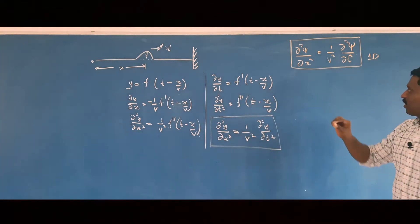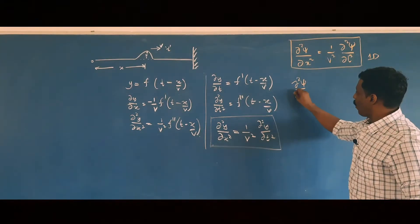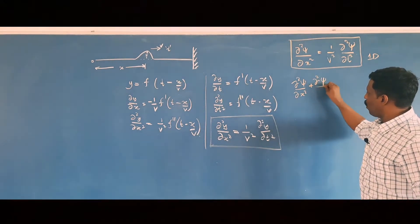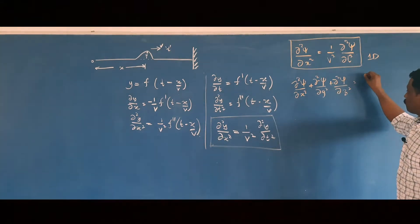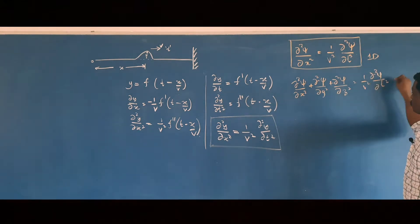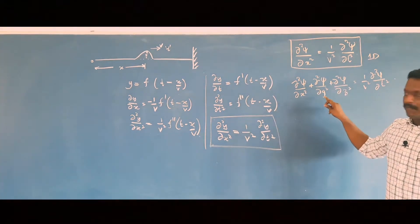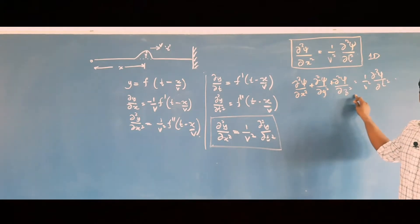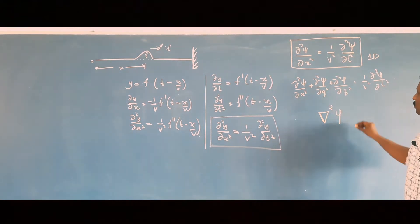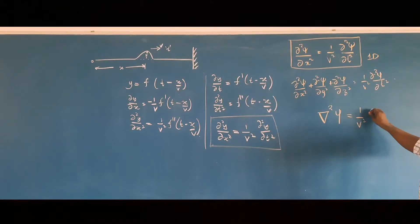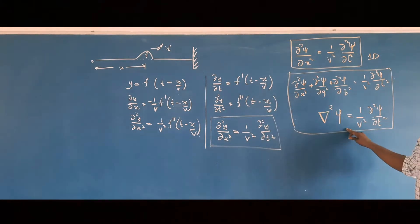To obtain the wave equation in three dimensions, we write the three-dimensional equivalent: ∂²ξ/∂x² + ∂²ξ/∂y² + ∂²ξ/∂z² = (1/v²) ∂²ξ/∂t². The left-hand side operator ∂²/∂x² + ∂²/∂y² + ∂²/∂z² is del squared (∇²), also known as the Laplacian. So ∇²ξ = (1/v²) ∂²ξ/∂t², which represents the differential equation of a wave in three dimensions.